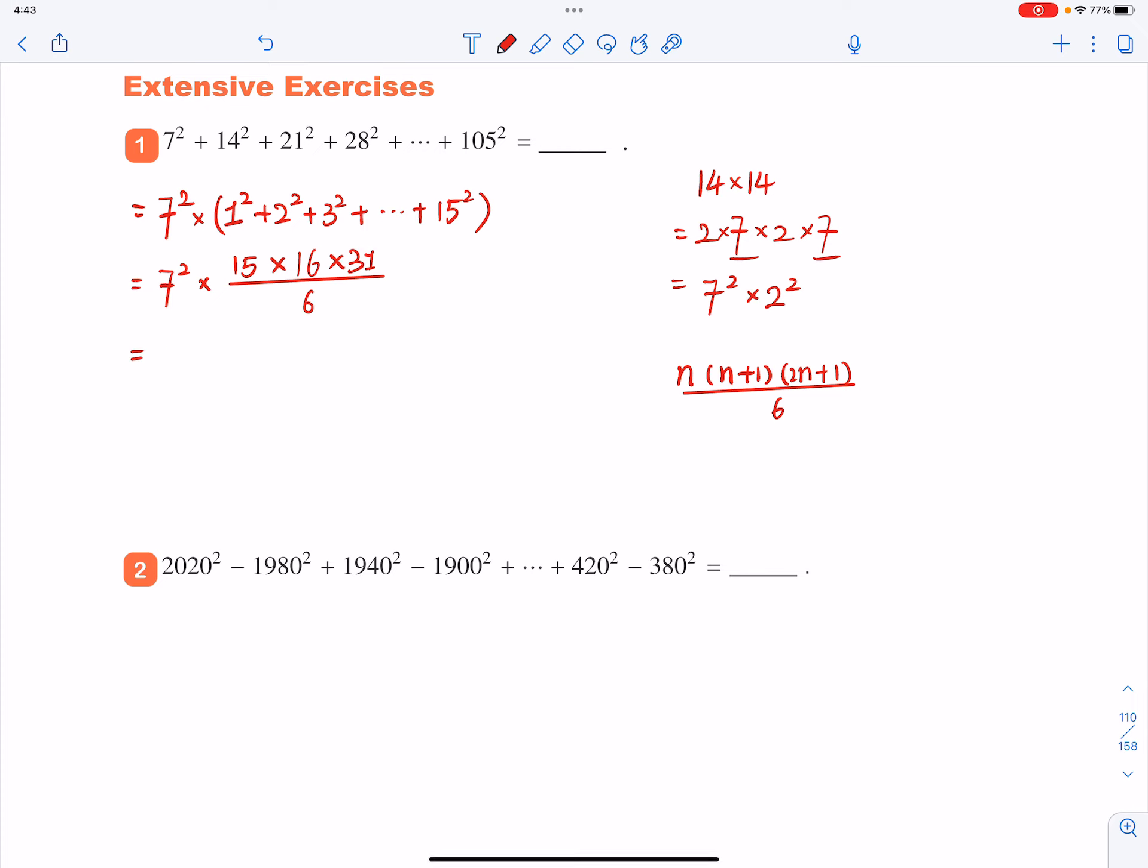And now let's see what we have. 7 squared equals 49. And then you'll see that 15 divided by 6, the common factor will be 3. So you got 5 here, and you got 2 over here. And then you'll see that 16 is divisible by 2.